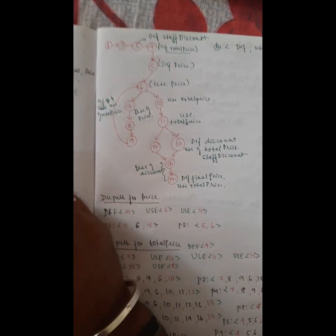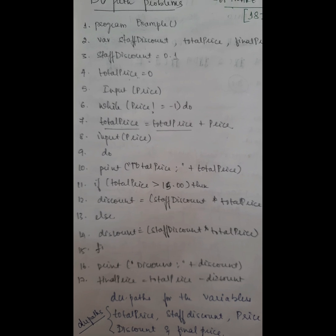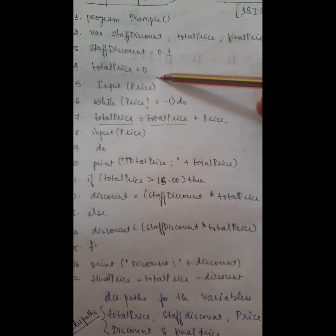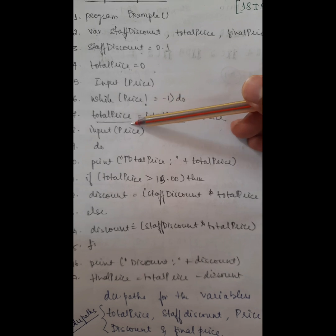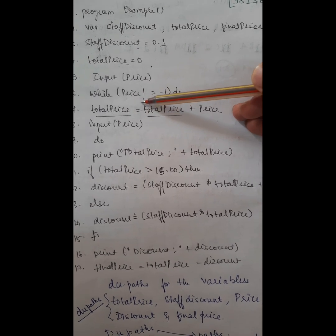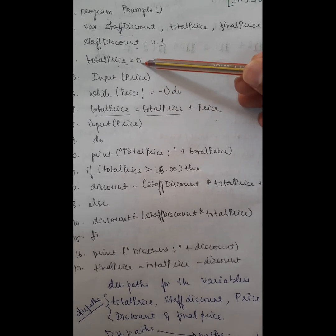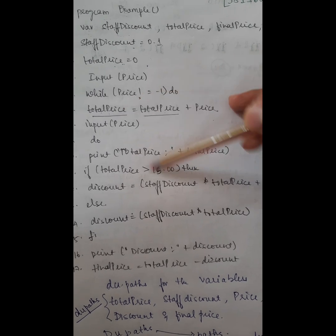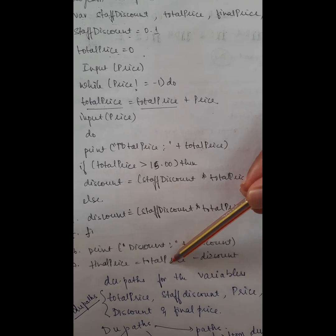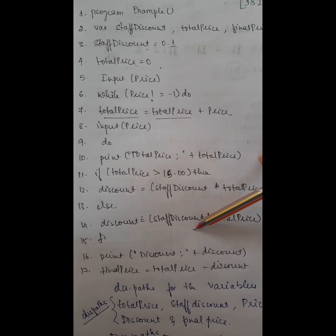In the program graph, you can see that staff discount is defined at line 3. Total price is defined at line 4, and also redefined at line 7. Price is defined at line 5, and it comes to use at the while condition. The same price defined at line 5 is used at line 6 and line 7. Total price defined at line 4 or 7 can be used at lines 10, 11, 12, 13, or 17. Discount is defined at lines 12 and 14, and staff discount defined at line 3 comes to use at lines 12 and 14.